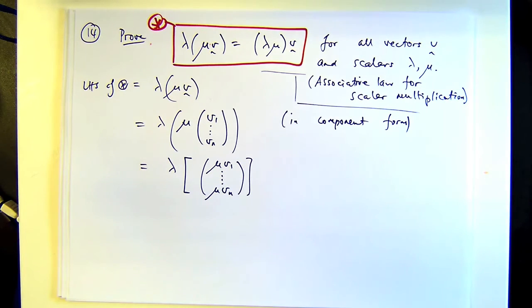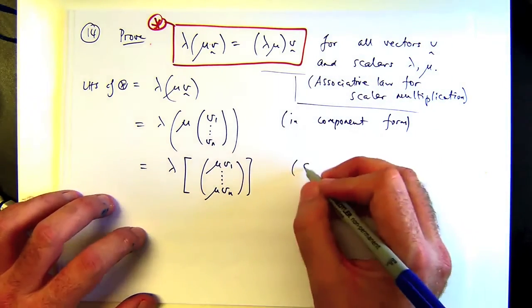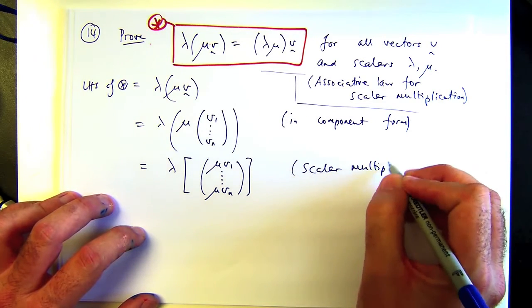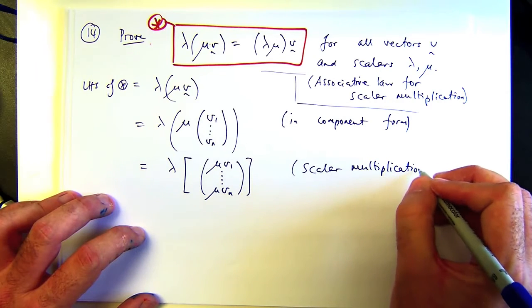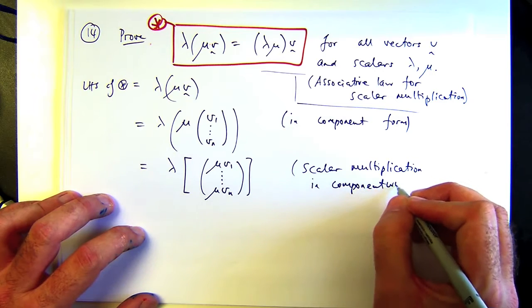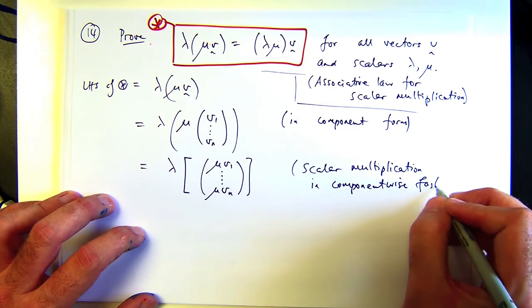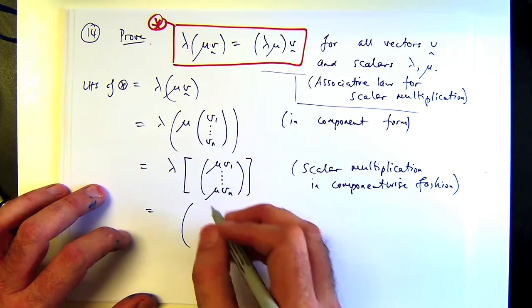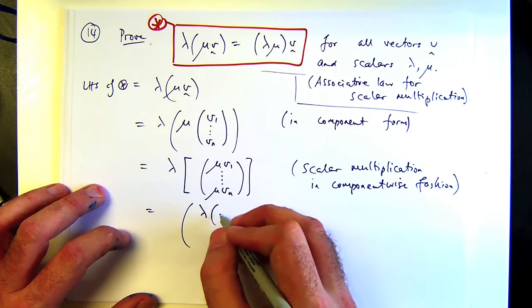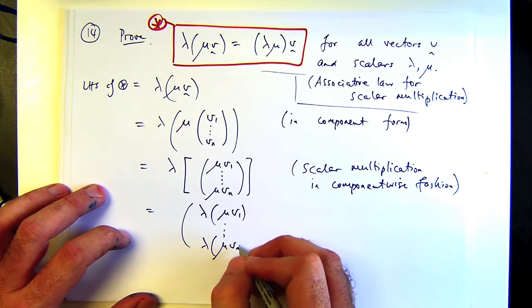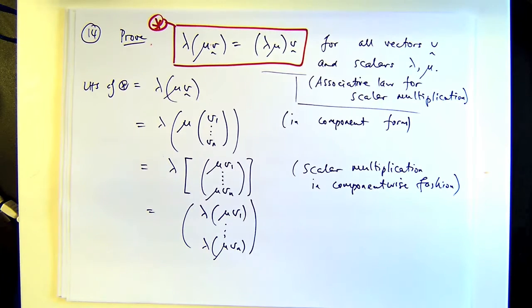And now what I can do is bring that lambda in. So you get this. Well, now what? I'm confused.